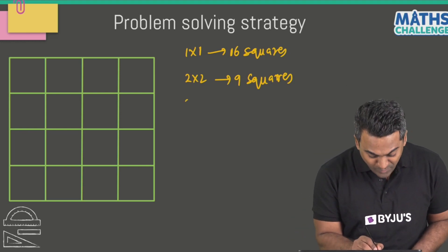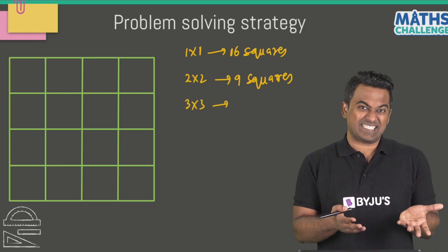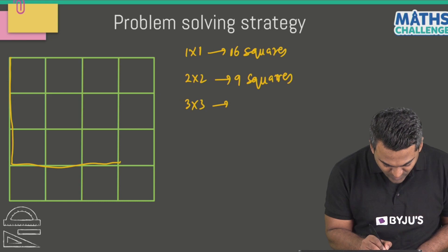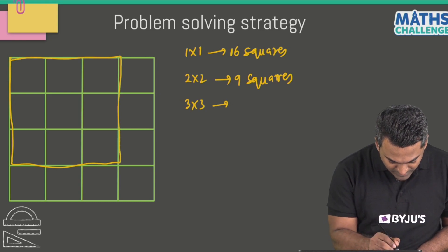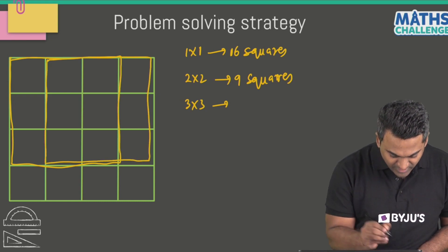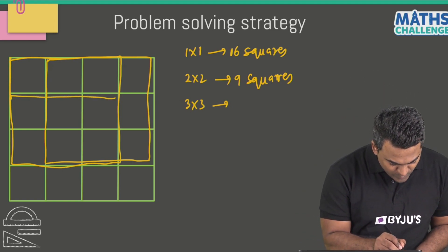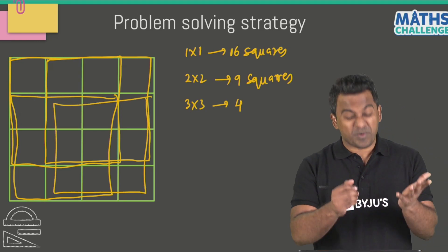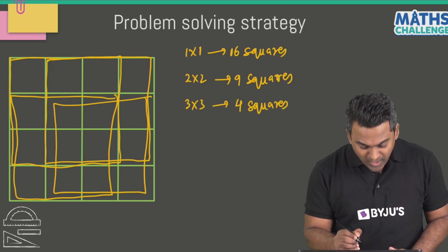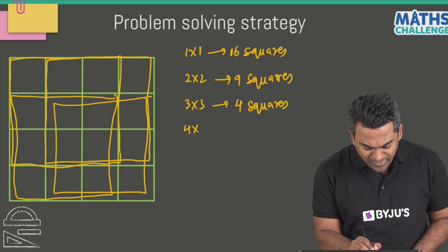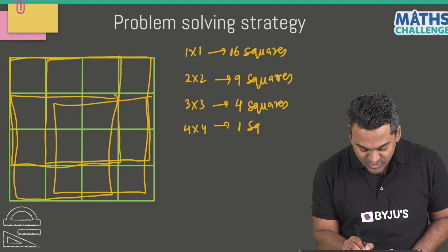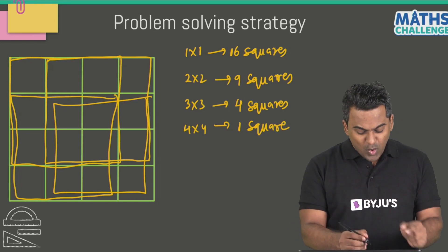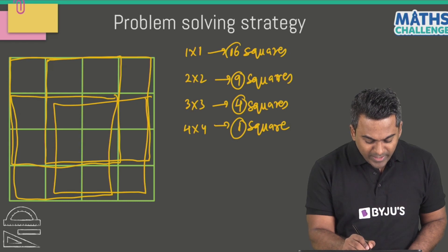How many 3 by 3 squares will there be in the 4 by 4 grid? I believe 4 — let's check. This is the first 3 by 3 square, this is the second, this is the third, and this is the fourth. As predicted, there are four 3 by 3 squares. And how many 4 by 4 squares? Of course, there's just one such square.